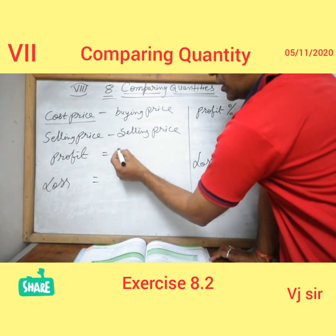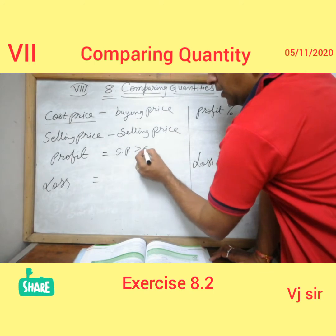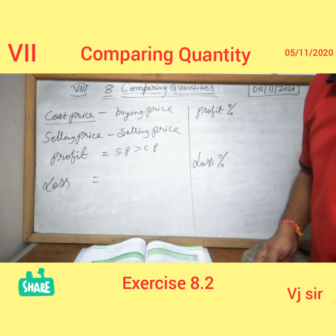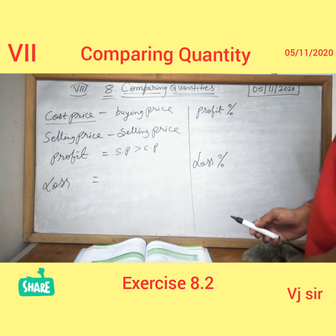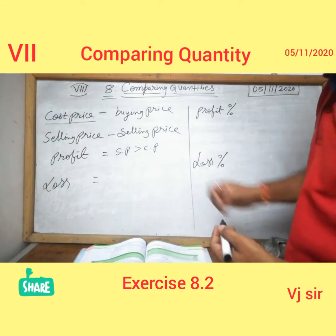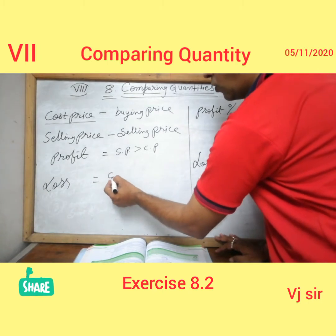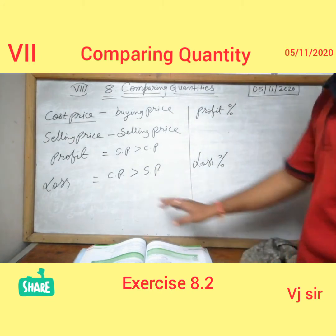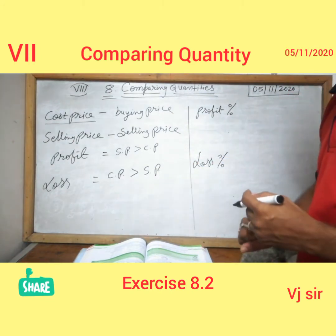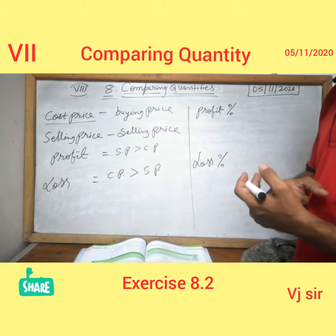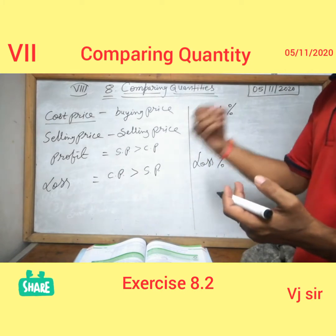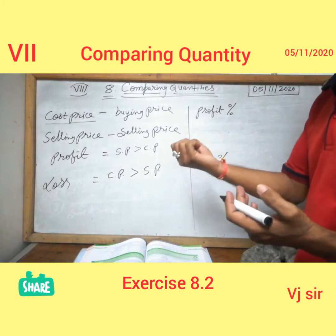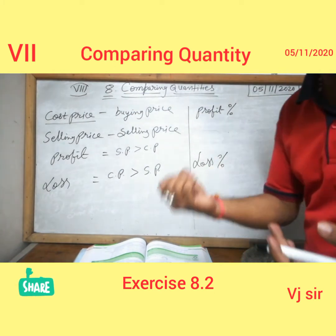Profit means when selling price is greater than cost price — when your SP is greater than your CP, then there is a profit. Loss means when your cost price is greater than SP. For example, if we buy something for 100 rupees and sell it for 90, then there is a loss. If we buy for 100 rupees and sell it for 110, we got a profit of rupees 10.